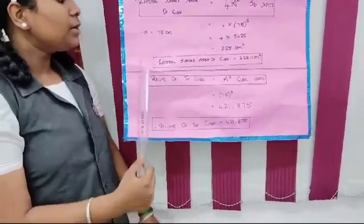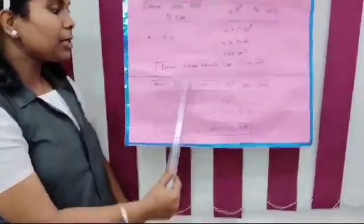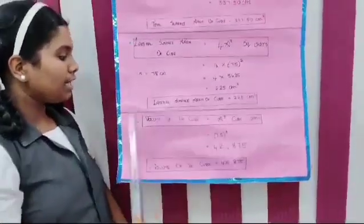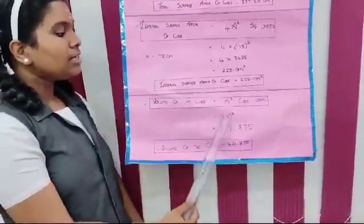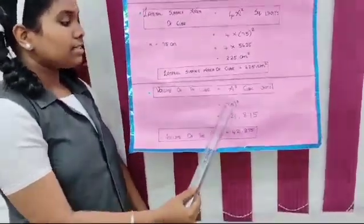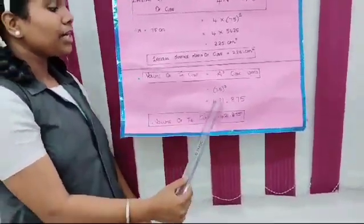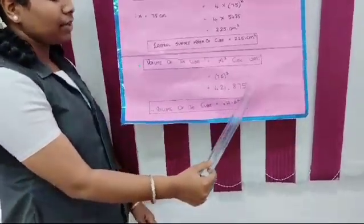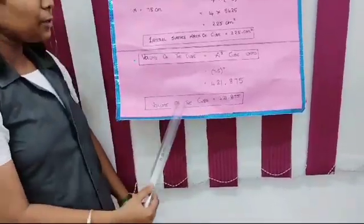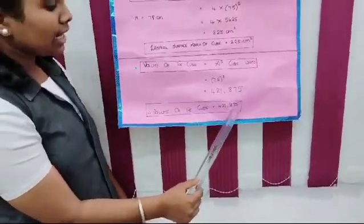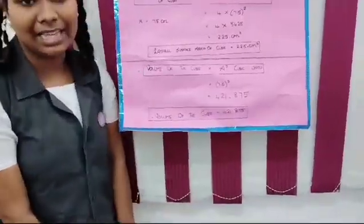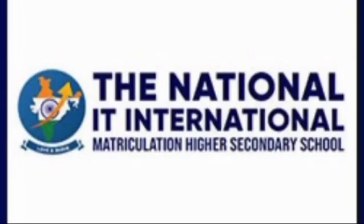Next, we calculate the volume of the cube. Volume of the cube is equal to A³ cubic units. Here, A is equal to 7.5, so 7.5³. Calculating 7.5 cubed, we get 421.875. So the volume of the cube is equal to 421.875 cubic units. Thank you. I am thanking Bisibi Educational Channel for giving this platform to share our views. Thank you, Bisibi Channel.